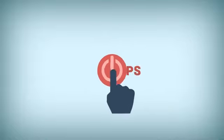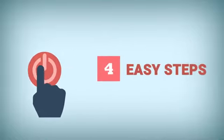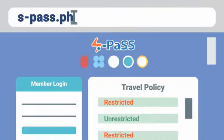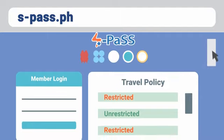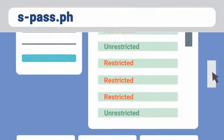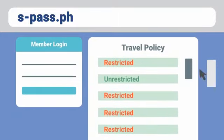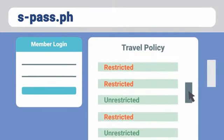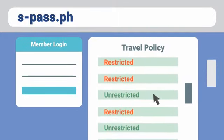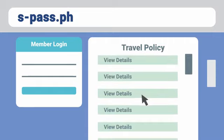Get started now with these four easy steps. Step 1: Visit the ESPASS website at espass.ph using your desktop, laptop, tablet, or mobile phone with internet to check for the travel policy of your destination LGU. If you're traveling to an unrestricted LGU, there's no need to create an ESPASS account.